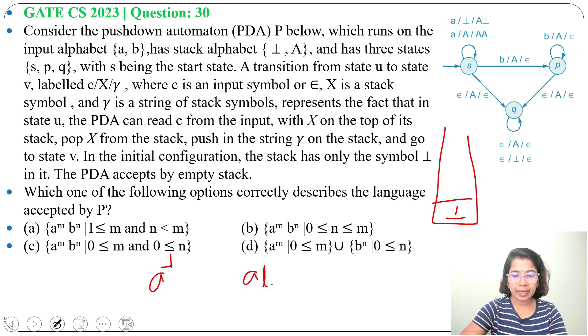Will it accept single A B? For A, we will push A above tau. Now for B, it will pop A. Now it goes to state P.